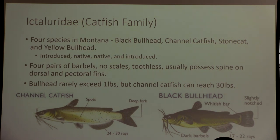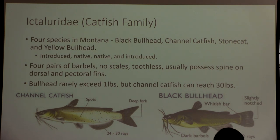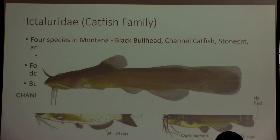The catfish family — contrary to what many people think, not all catfish in Montana are invasive. The channel catfish and the stonecat are both native. The introduced bullhead species include black bullhead and yellow bullhead, which looks similar but slightly lighter. Catfish have a really distinct four pairs of barbels and no scales — just skin, unlike the sturgeon's armor-like plates. They are also toothless. Bullheads rarely exceed one pound, so they're usually not great game fish, and they're very good at stealing bait.